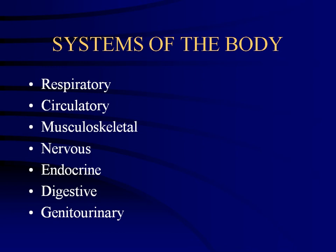Body systems are groups of organs that work together for a common purpose. The respiratory system includes the lungs, diaphragm, trachea, mouth, and nose. The digestive system also uses the mouth and throat — they share common structures — but routes down the esophagus into the stomach and through the rest of the body. Systems can share organs but serve different functions.